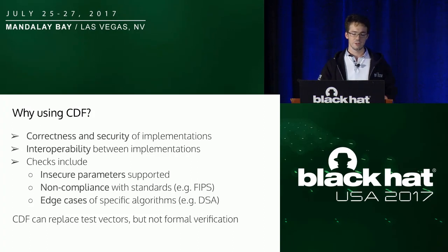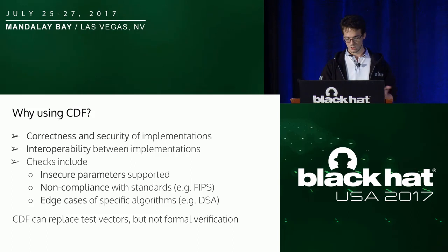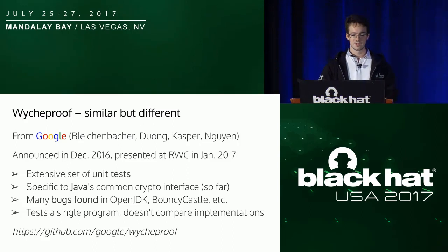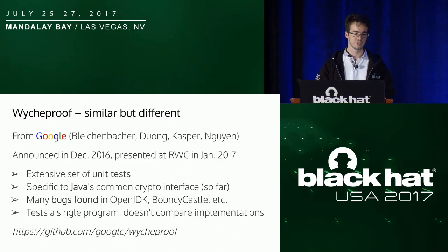CDF will test functionality through the differential fuzzing approach, but it will also do more. We decided to also test correctness and security through unit tests — a bunch of unit tests run against both implementations so you can compare the outcome. We check for insecure parameters, non-compliance with standards, and other interesting edge cases. We won't replace formal verification at all — the goal is to replace unit tests and do a bit more. It also tests interoperability. There's a complementary project by a team of researchers at Google with really nice unit tests for the Java common crypto interface that found a lot of bugs. We plan to integrate their tests differentially in the future.